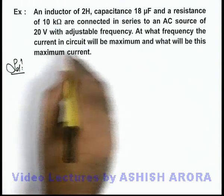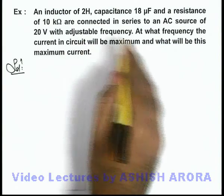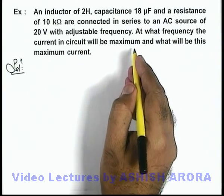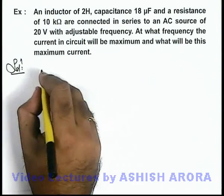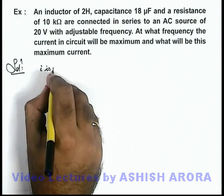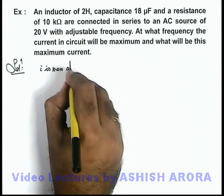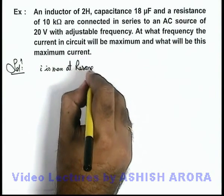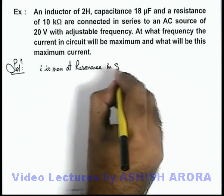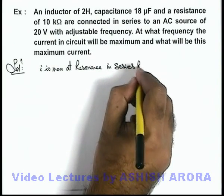Here we know well that current in series RLC circuit is maximum at the condition of resonance. We can write I is maximum at resonance in series RLC circuit.